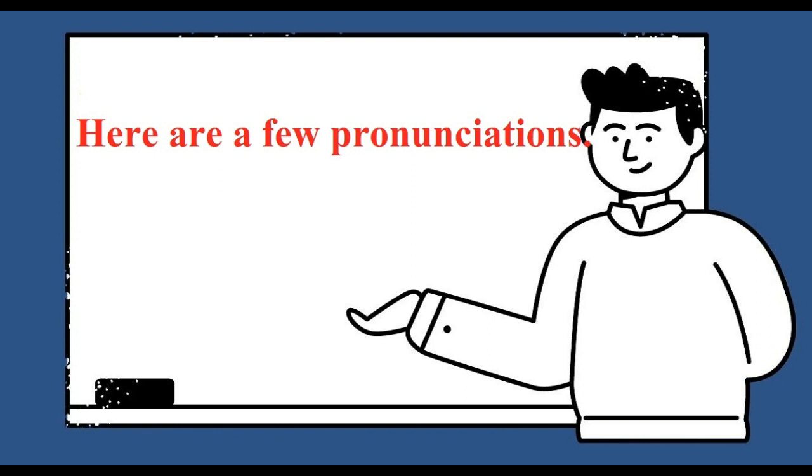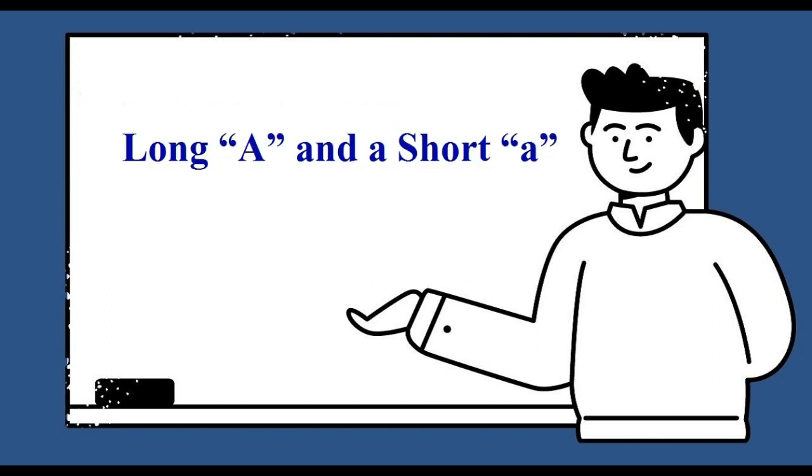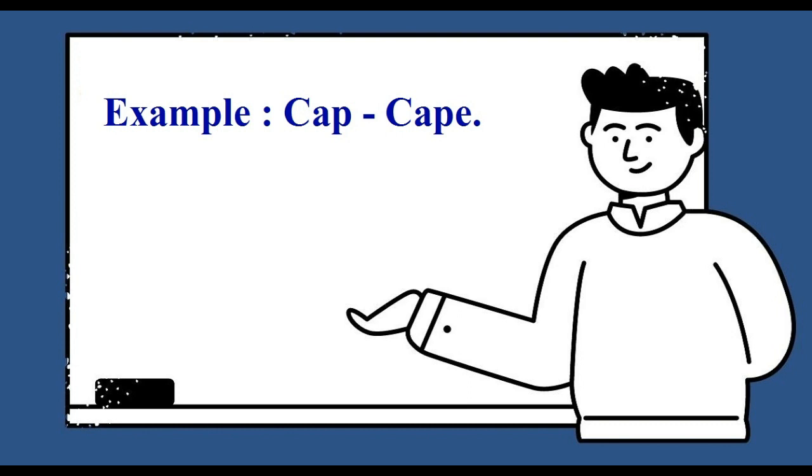Here are a few pronunciations. First we shall learn what will be the pronunciation of vowels. A long A and a short A. A long A is pronounced as A and a short A is pronounced as A. Example: cap, cape.